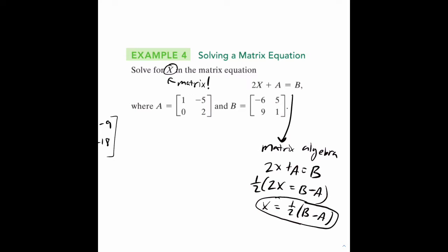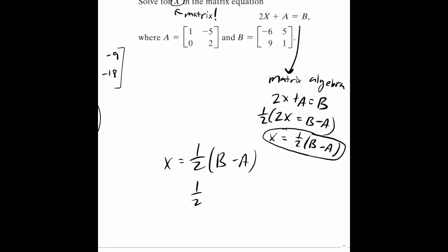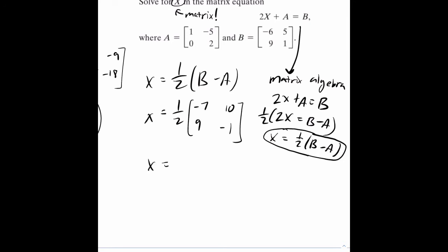To get X, we follow those instructions: X = 1/2(B - A). Let's compute B minus A: negative 6 minus 1 is negative 7, 5 minus negative 5 is 10, 9 minus 0 is 9, 1 minus 2 is negative 1. Multiplying by 1/2 gives us negative 7/2, 5, 9/2, negative 1/2.